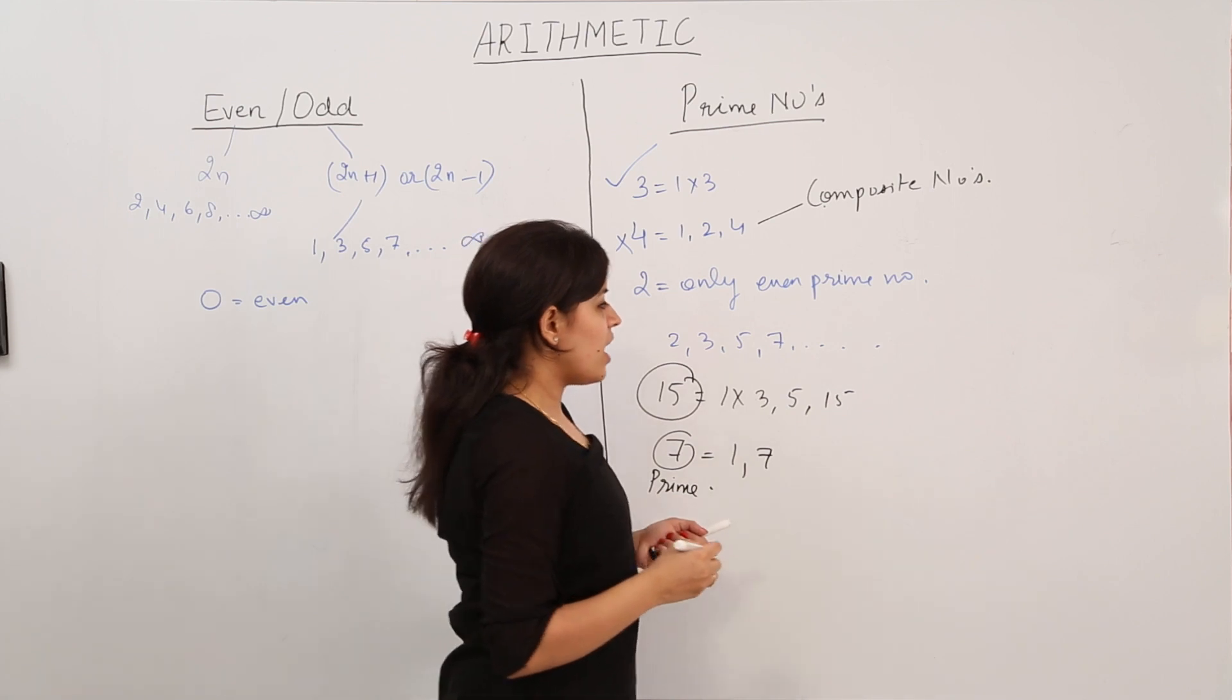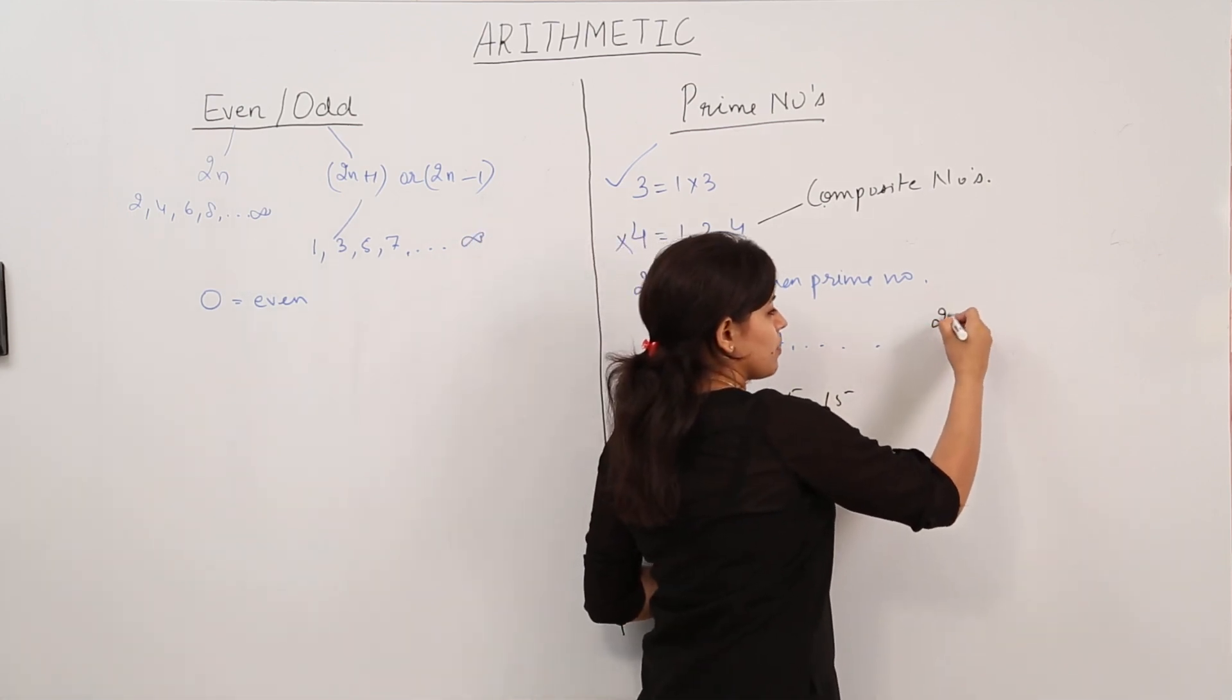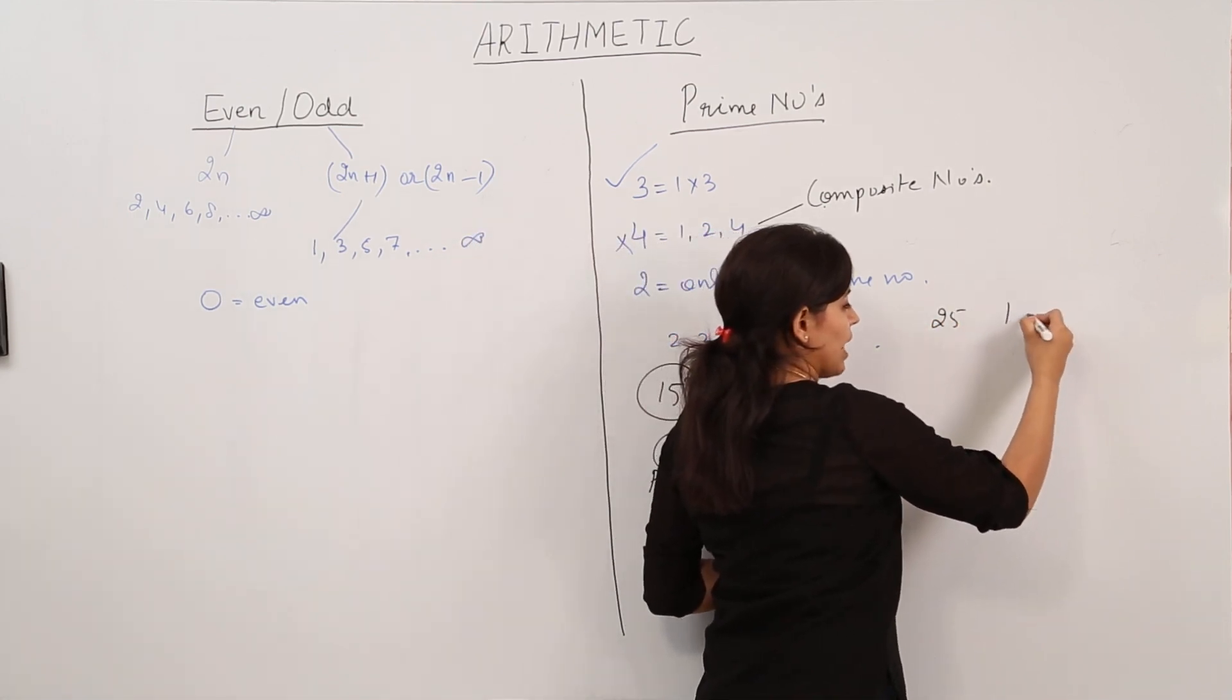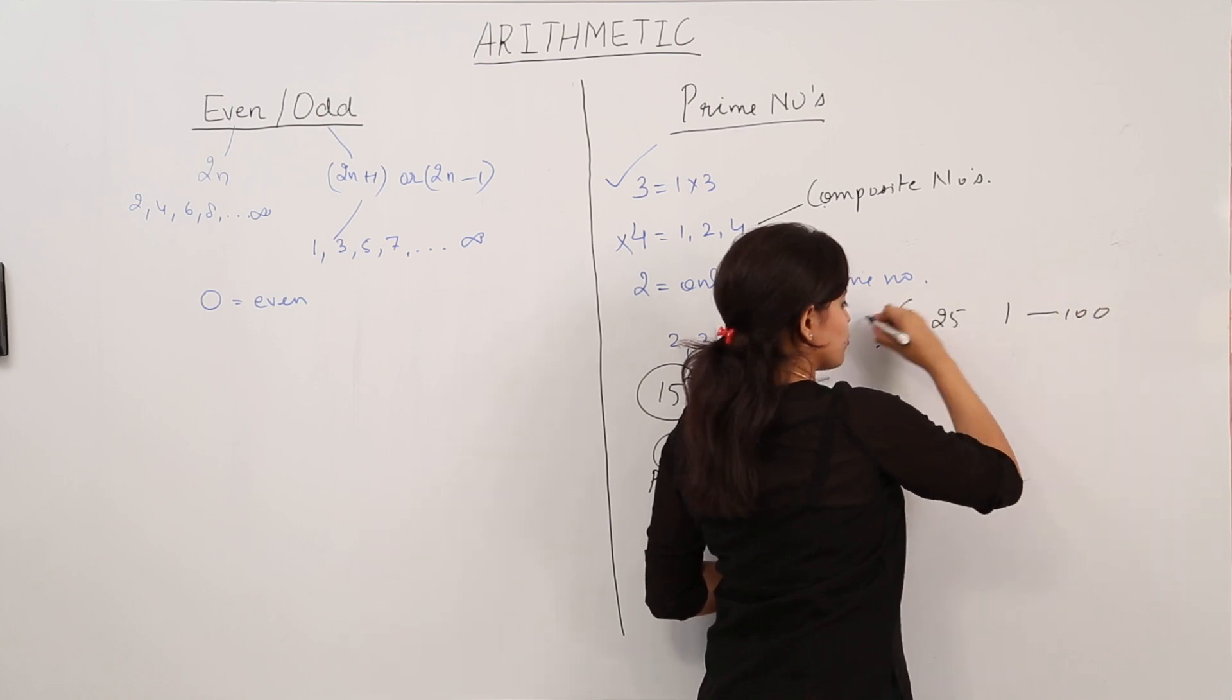So there are 25 prime numbers between 1 and 100. This is something that you should remember.